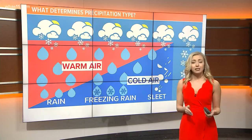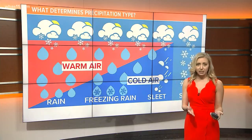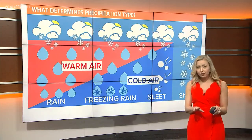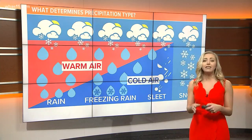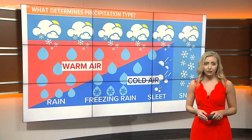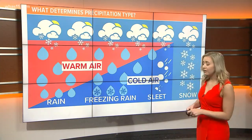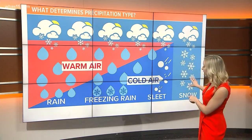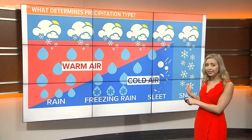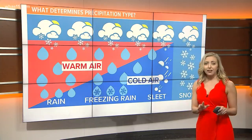Now let's talk about sleet. Sleet begins as ice high in the atmosphere, falls through a thin layer of warm air, and then into another larger layer of cold air, giving it enough time to refreeze before it hits the ground.